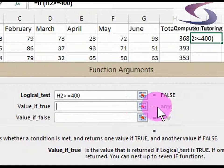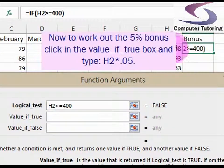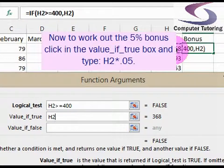So the value if true. If it was true, he would get his 5% bonus. So the 5% bonus would be H2 multiplied by .05.